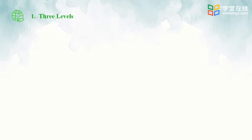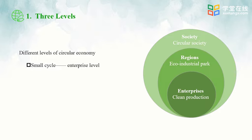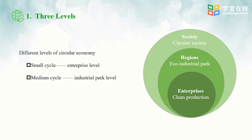We can see the three levels in this figure. First is the small cycle. The small cycle at enterprise level is mainly achieved through cleaner production. The medium cycle is at industrial park level, achieved through establishing ecological industrial parks. The big cycle is a circular society.